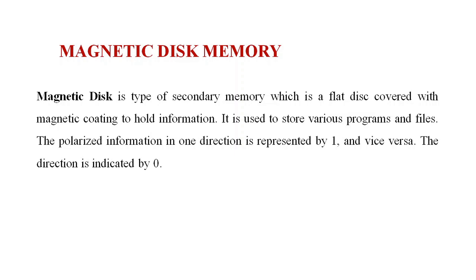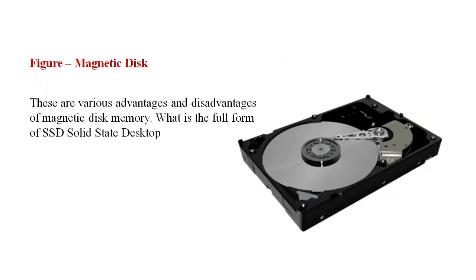The polarized information in one direction is represented by one, and vice versa — the other direction is indicated by zero. Magnetic disk can be stored in the secondary memory device. It is a disk covered with a magnetic coating to hold the information. The information in one direction is represented by one, and the other direction is represented by zero.